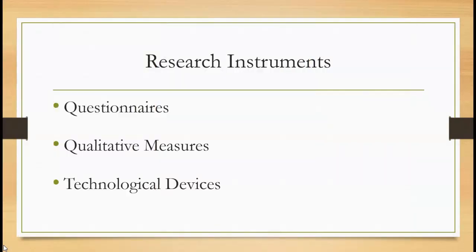Some research instruments we have are questionnaires, qualitative measures, and technological devices. The key difference is that questionnaires are an easy way to collect data and crunch numbers statistically, whereas qualitative data requires people to go through the information and make sense of it to understand the best way to go.